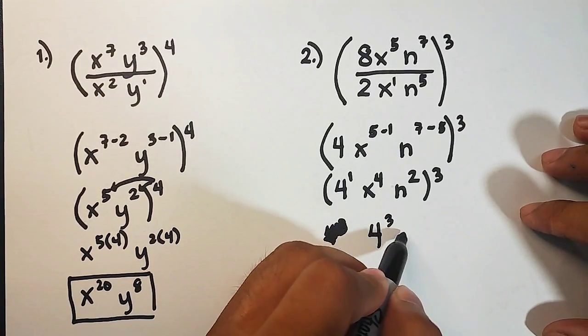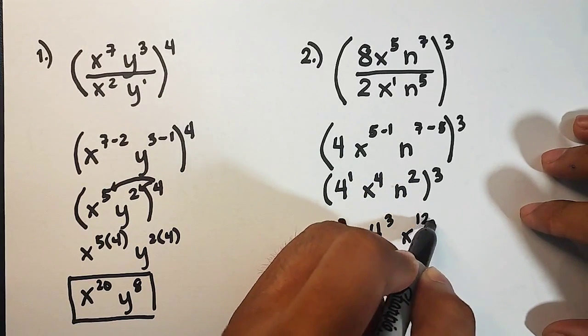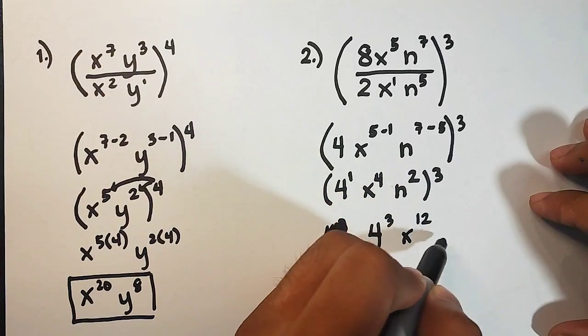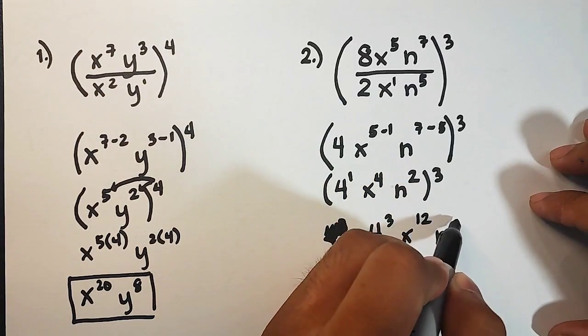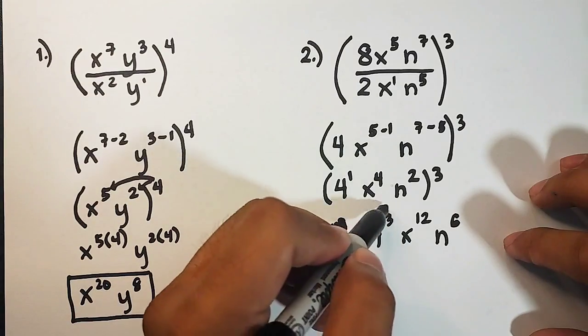For the variable x, 4 times 3 is 12. So x raised to 12. For the variable n, 2 times 3 is 6. Now, we're not yet done because we need to simplify this part.